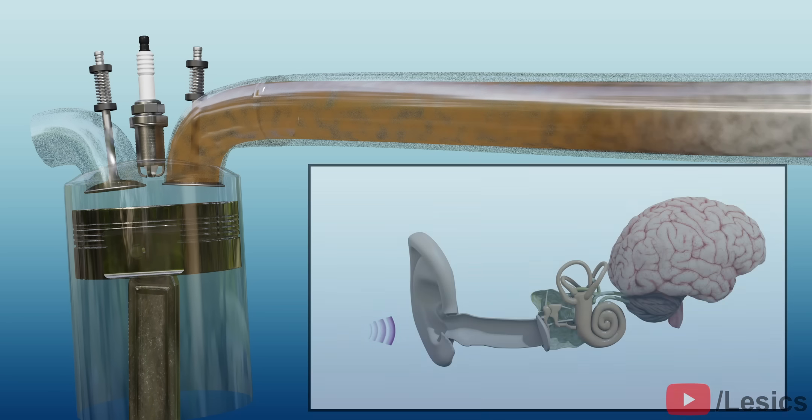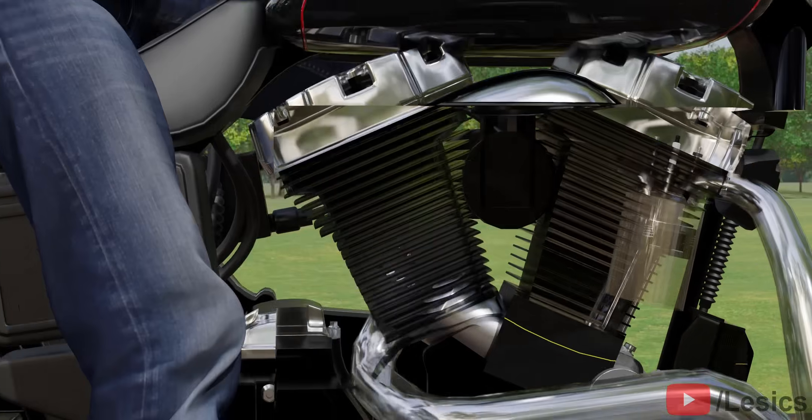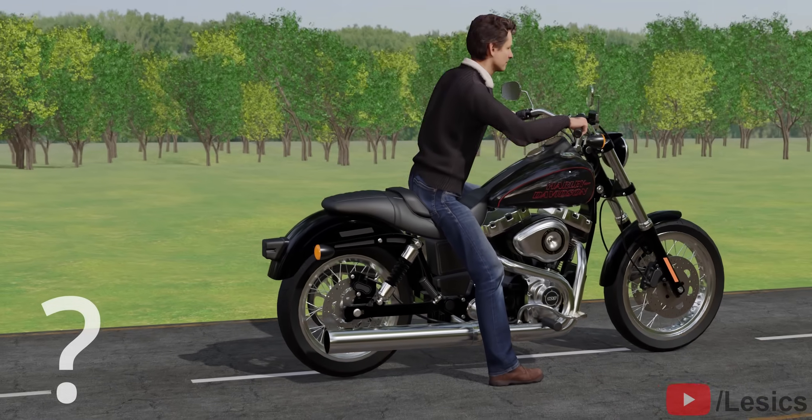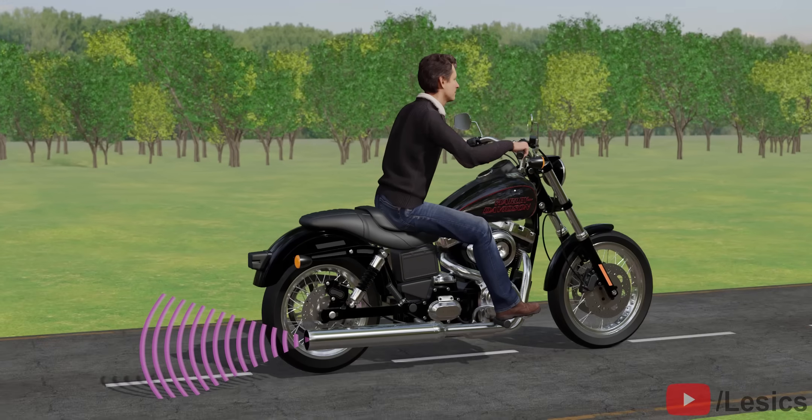These sound waves then strike your eardrum, and it vibrates. These vibrations are sent to your brain, and you hear the sound. Here's an interesting question. What do you think changes in the sound wave to make it louder or quieter? Yes, it's the amplitude.